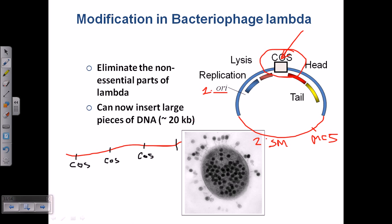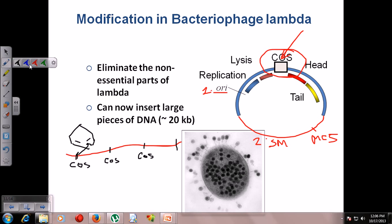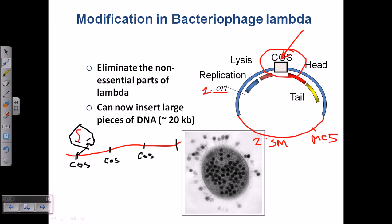During the packaging, when the protein head of the lambda phage is being filled, cleavage of the genetic segment is done from one cos site to another cos site. This segment is what gets packaged, so what is packaged inside the phage head is only the DNA from one cos site to another cos site. For the next head, packaging proceeds from the next cos site — so the first genome, second genome, third genome, and so on are packaged sequentially.